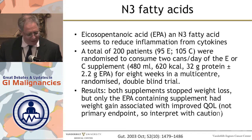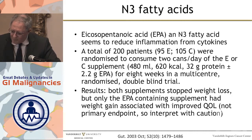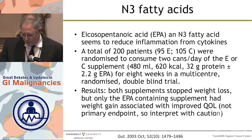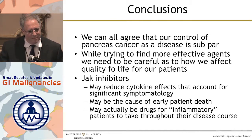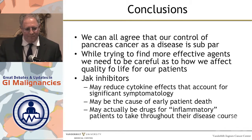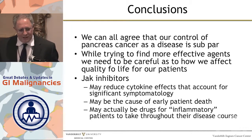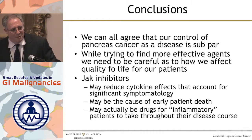I won't go through the icosapentaenoic acid data in detail, but the bottom line is that it also had data suggesting maybe we make some small differences with weight gain and quality of life with something that might reduce symptoms. I think it's important when we're dealing with these patients that we start looking at these questions. We can all agree that uncontrolled pancreas cancer is a disease that's subpar — none of us feel good about how well our trials do. We talk about the success of gemcitabine/nab-paclitaxel and FOLFIRINOX, but neither one gets us to the median survival of colon cancer with 5-FU alone. So while trying to find more effective agents, we need to look at things that impact positively on symptoms. JAK inhibitors are something for the future — whether or not they're actually effective against the cancer I don't know, but if they're effective against the symptoms, maybe that's just as important.